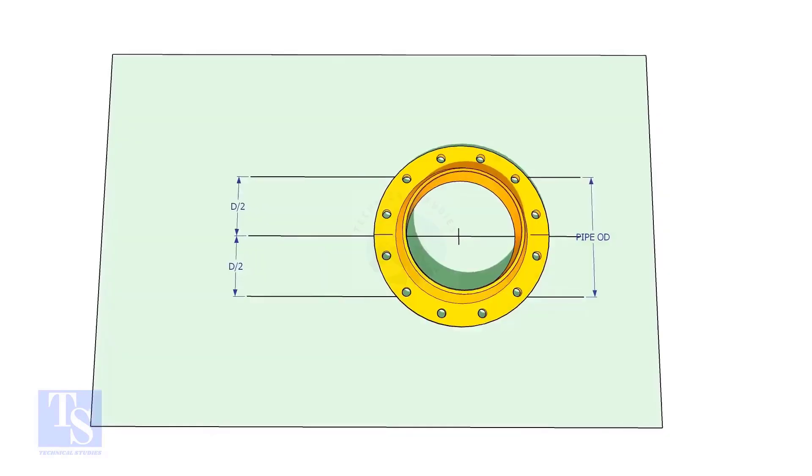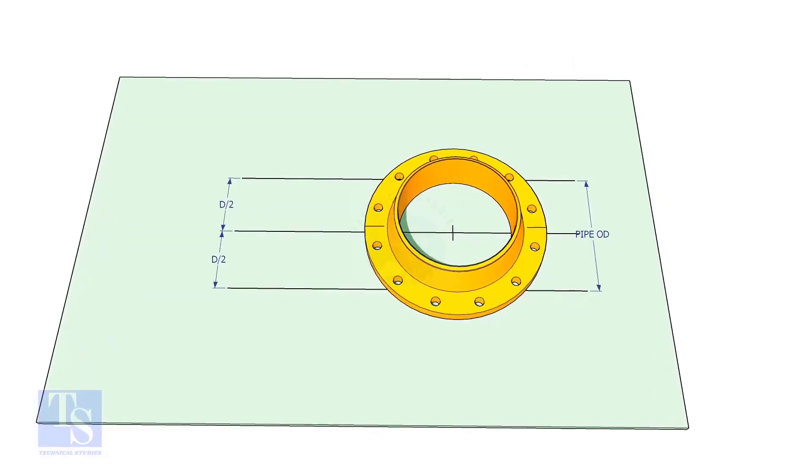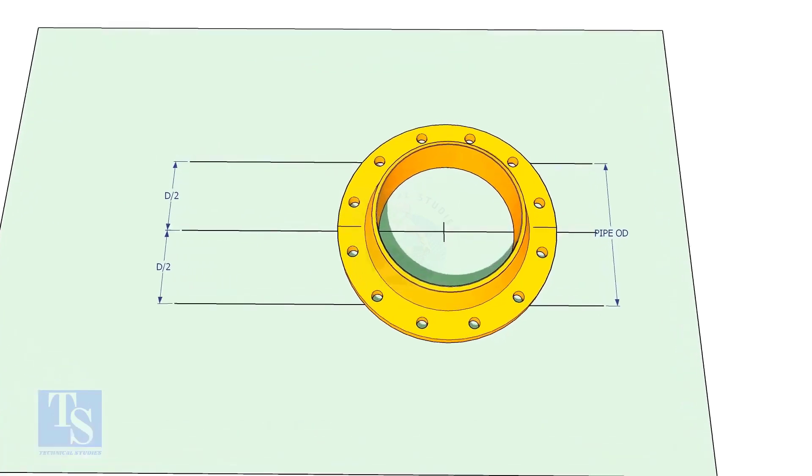Draw a line on a straight plate. Draw two parallel lines as shown. The distance shall be half OD of the elbow. Put the flange on the plate as shown and match the center line of the flange and the line on the layout.